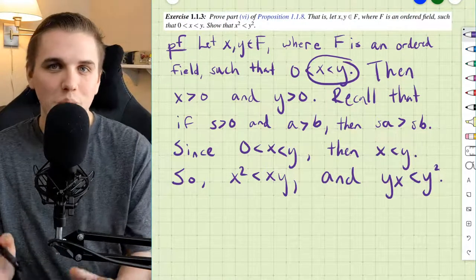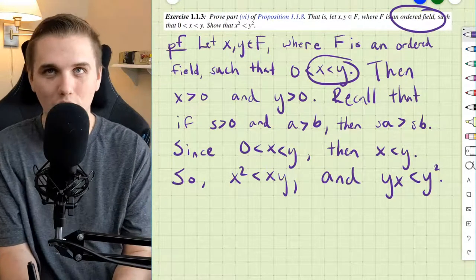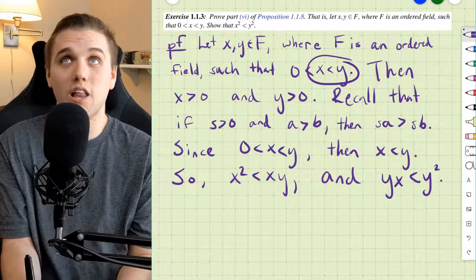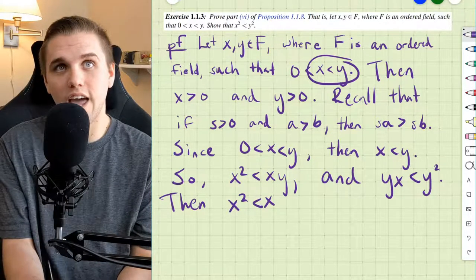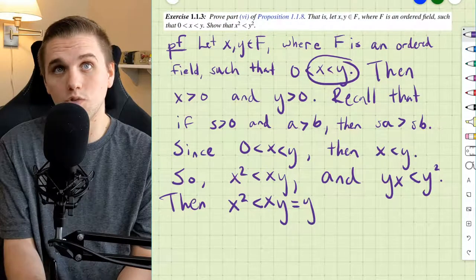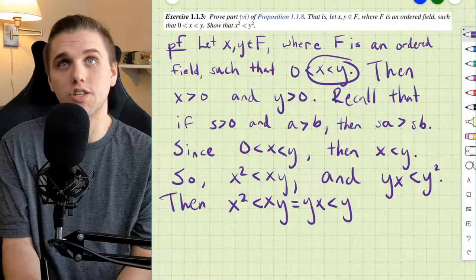Now, why am I saying multiply on the left still when I already know that it's an ordered field that I'm working over? Well, that's just because I want to clarify at this point that x squared is less than xy which equals yx which is less than y squared.